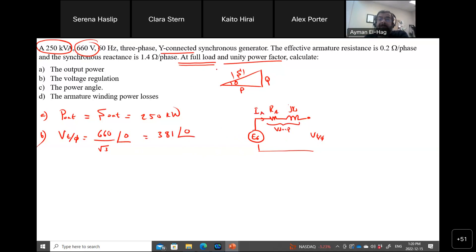So how to find I_A? Again, we are given the condition. Your I_A as a magnitude will equal to your S divided by root 3 times V_line. So this is equal to 250 times 10 to the power of 3, divided by root 3, and the voltage is 660.